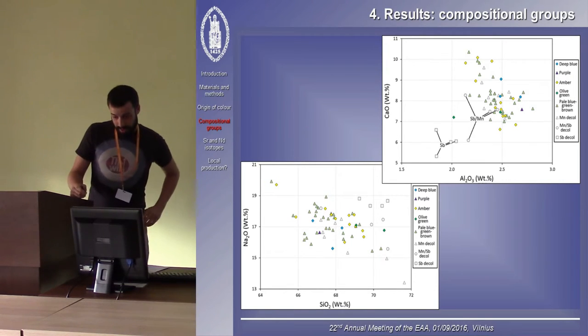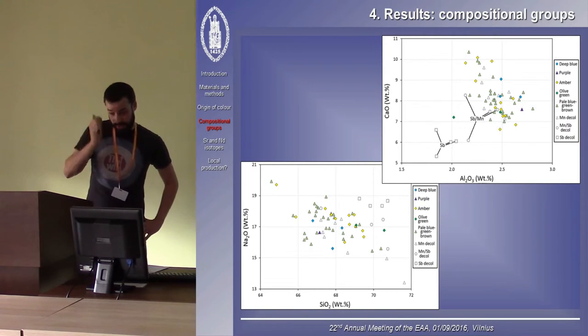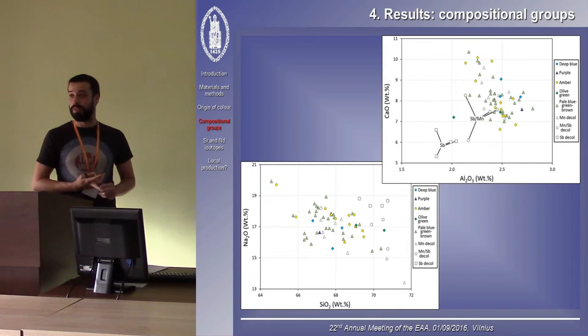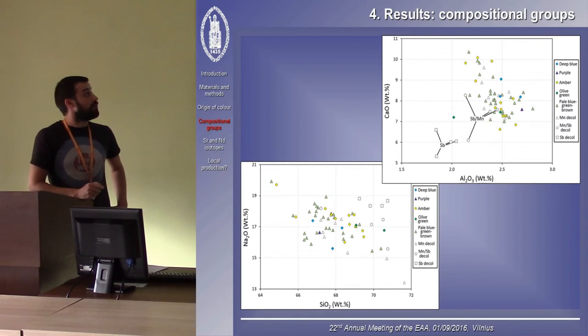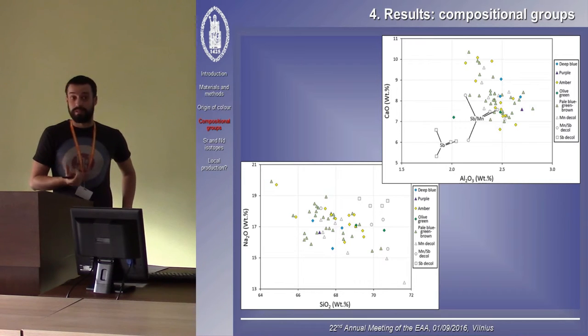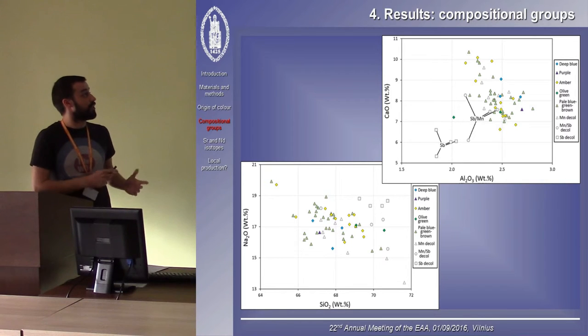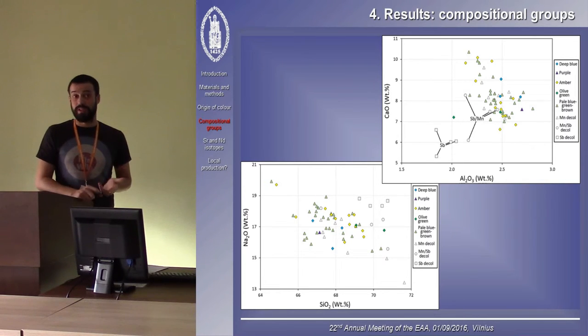But when we look at the mixed decolorized glasses, so the ones that both contain antimony and manganese, we can see that the base glass composition of those glasses lies in between our major group and the ones decolorized by antimony. So, next to their intermediate concentrations of antimony and manganese, they also have intermediate concentrations of calcium and aluminum. This suggests that these are actually the result of recycling, during which the manganese and antimony decolorized glasses were remelted together.